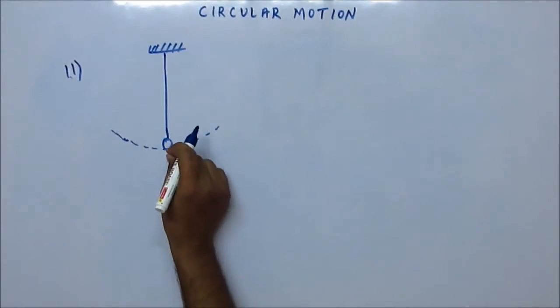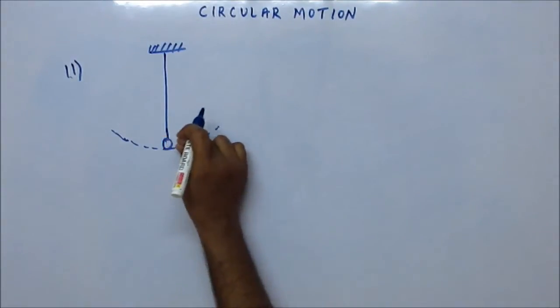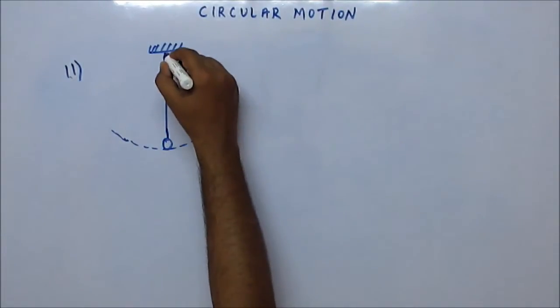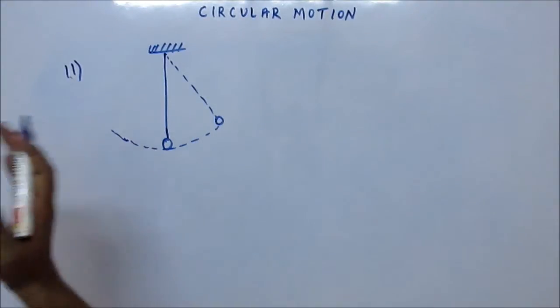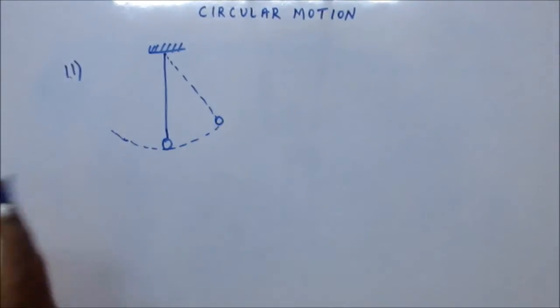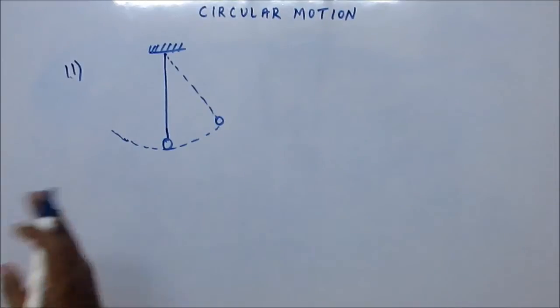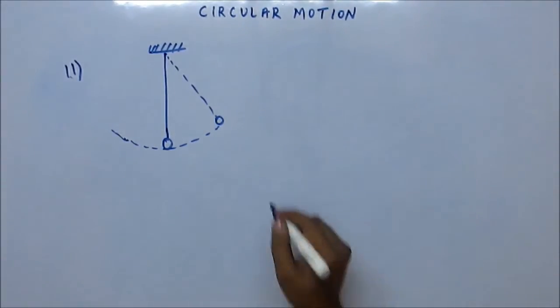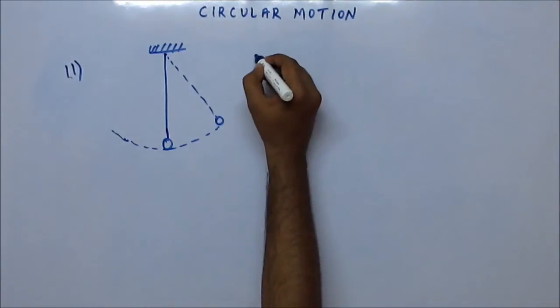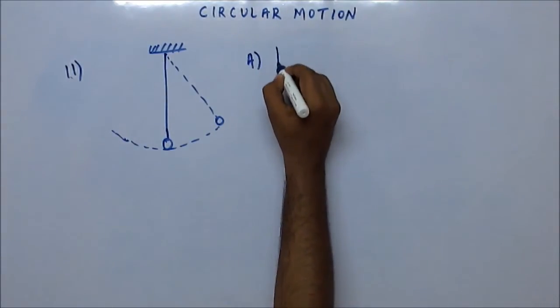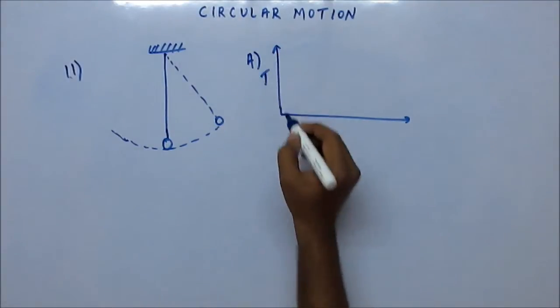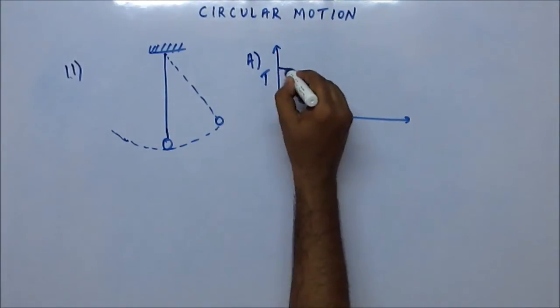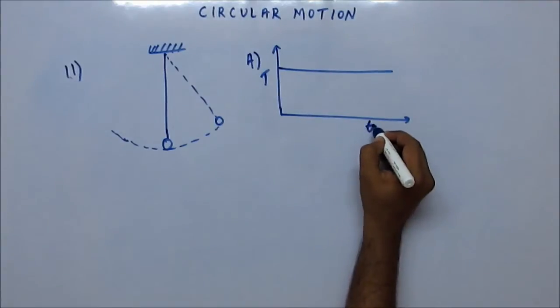Suppose you have given some displacement to this bob, so you have moved the bob to this point and then you let it go. The pendulum will have a to and fro motion. Now the question is, what will be the graph between the tension in the string and the time? I am giving you four options and you tell me which one is correct.